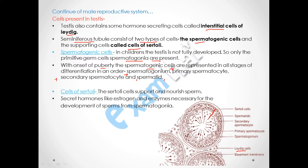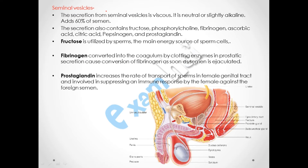As you can see in this diagram, these are the spermatogenic cells and these are the Sertoli cells. Sertoli cells support and nourish the sperm, and secrete hormones like estrogen and enzymes necessary for the development of sperm from spermatogonia. That is why Sertoli cells are also called nurse cells.